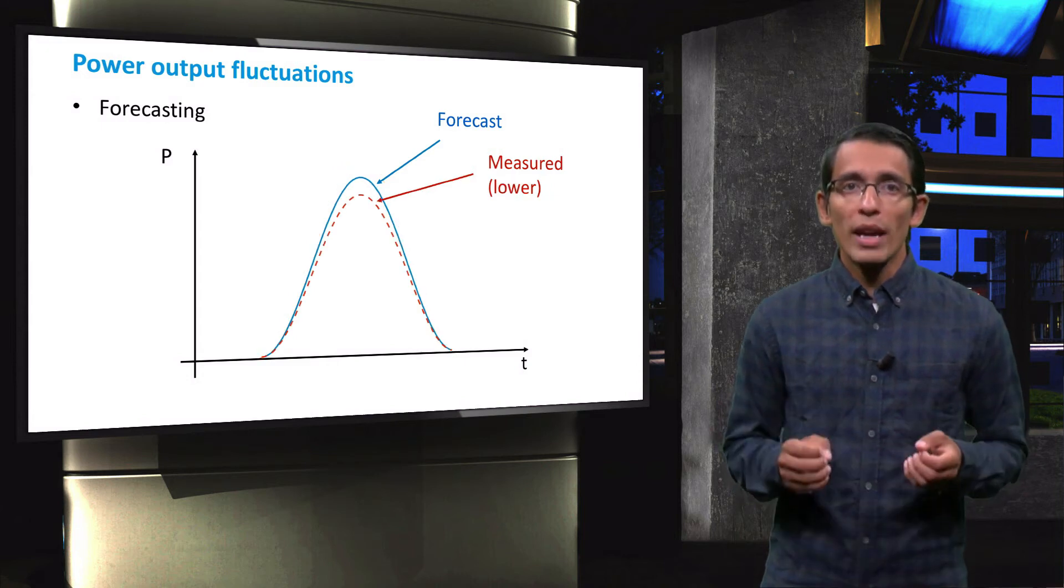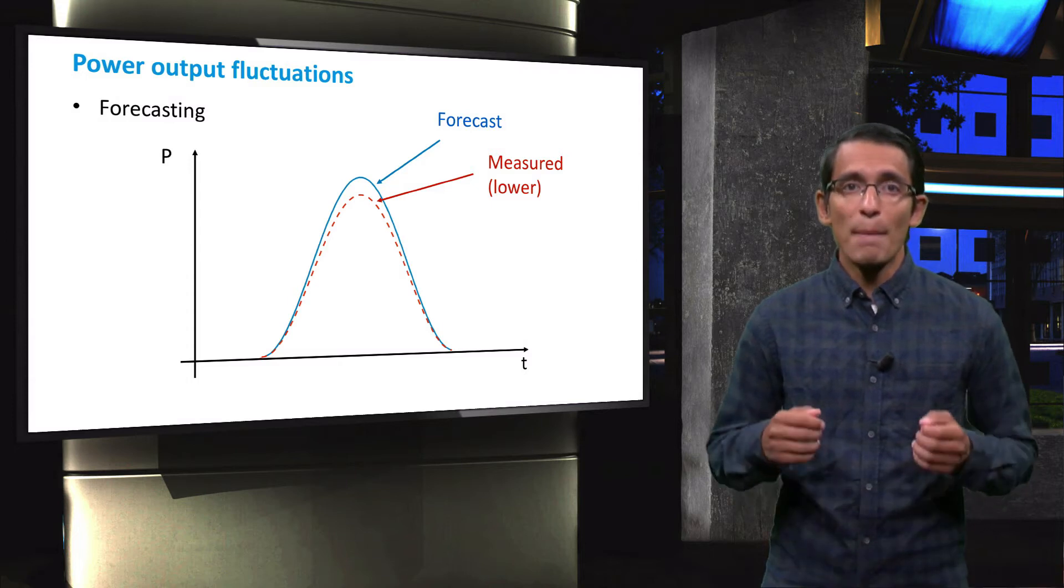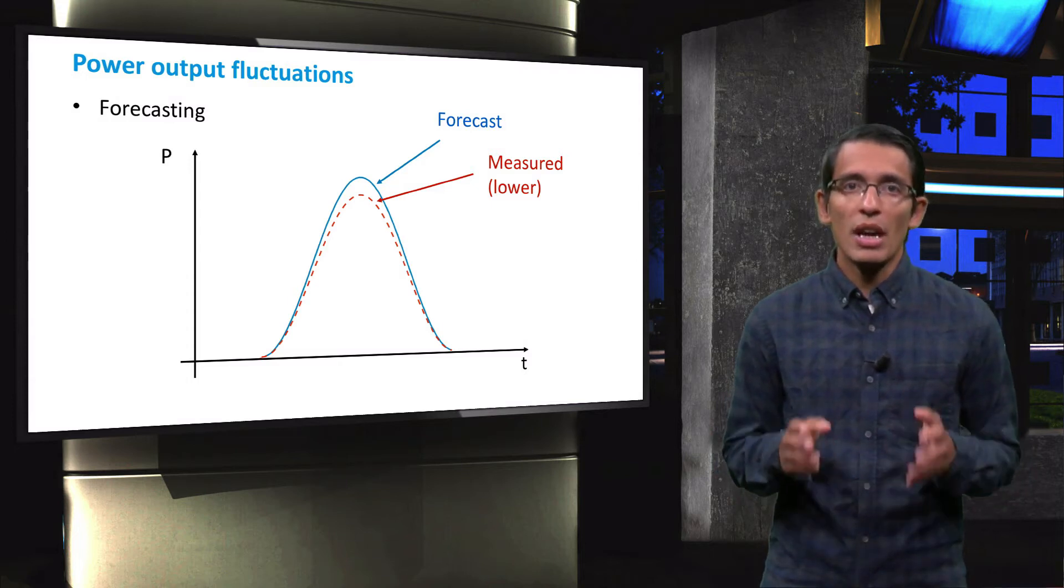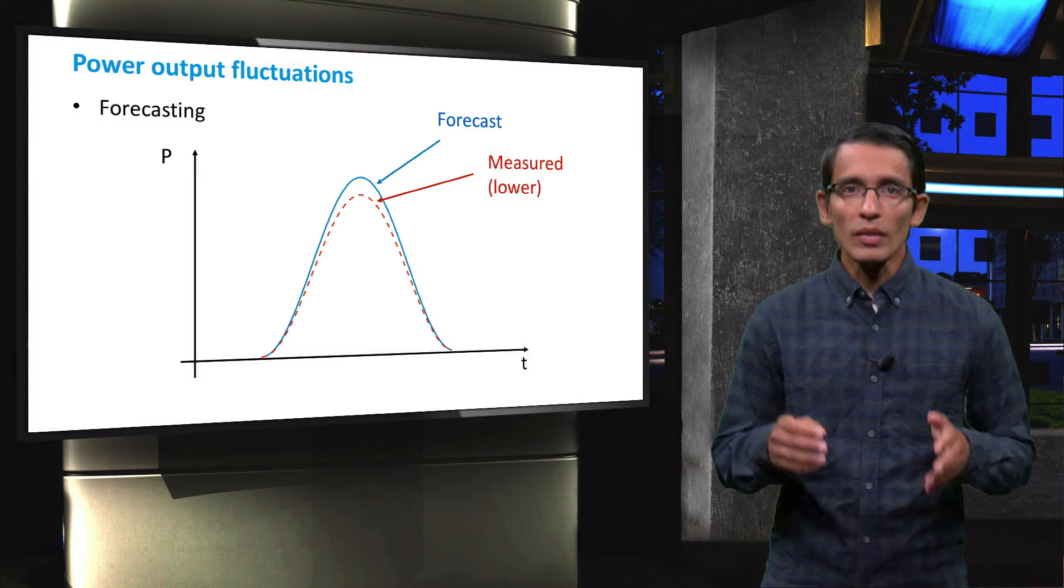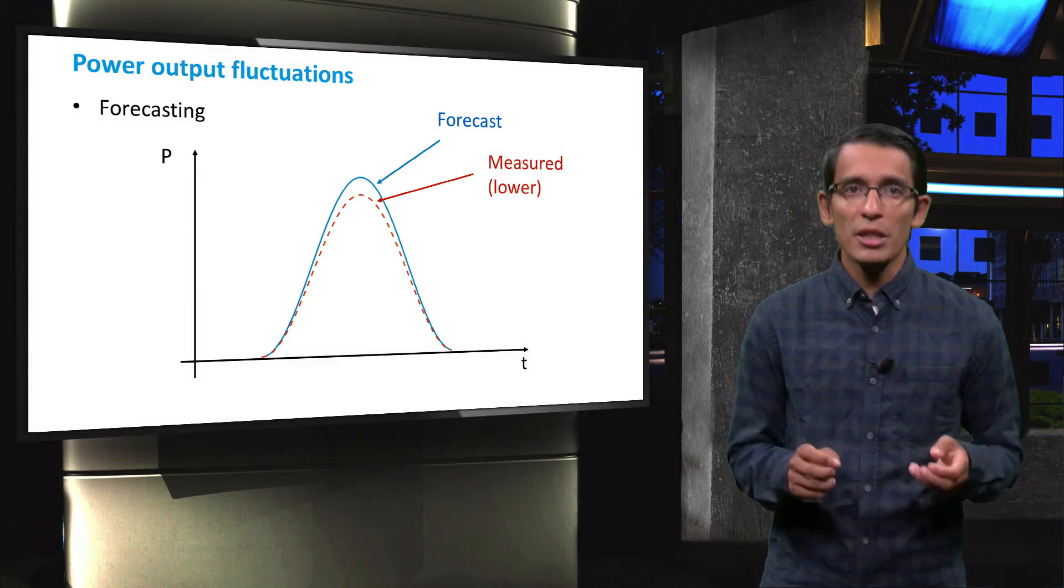On the other hand, the forecast might also be higher than the actual PV production. In this case, backup power generation is needed to cover the energy demand. It is clear that even though forecast algorithms could be very accurate, these are nonetheless affected by unexpected weather conditions or problems in distributed generators.